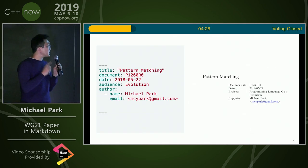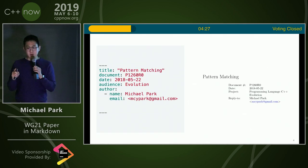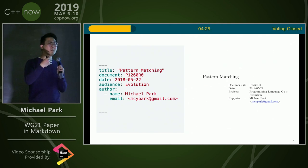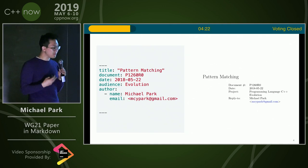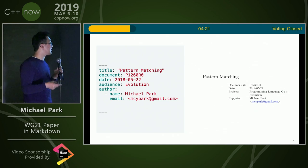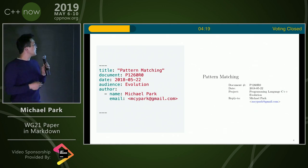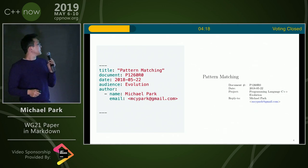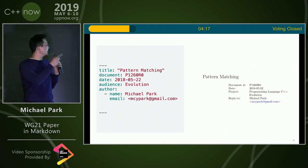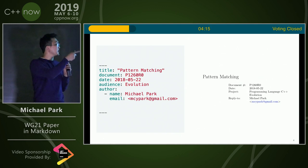First of all, we need a title. I'm going to give you a bunch of different common elements that come up in C++ papers and how I tackle those. For the title, document number, date, et cetera — you use YAML front matter, and you get the result shown on the right.